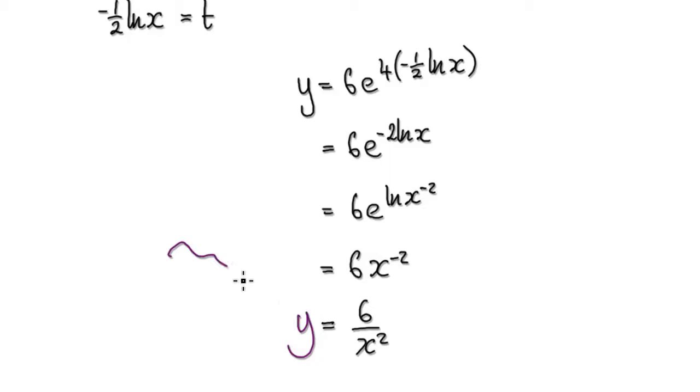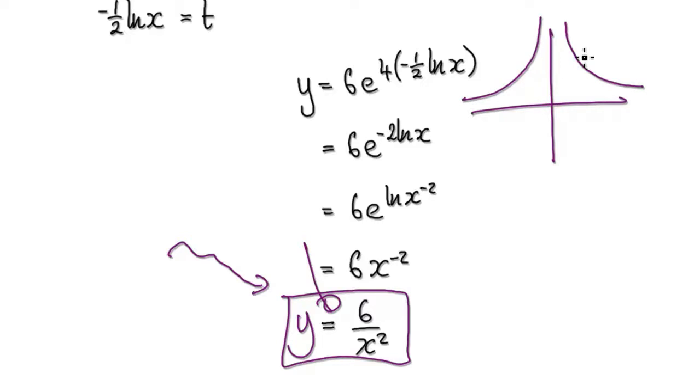So we've in effect converted it into the Cartesian form. So this graph here would then look like this, something along the line of this. So this is y equals 6 over x squared.